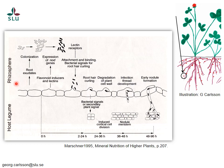The formation of a root nodule starts by bacteria in the rhizosphere sensing exudates from the roots — different types of carbohydrates, proteins, or small molecules leached out from the root. These cause certain reactions in the bacteria: they start to grow, divide, and multiply because some of these compounds provide energy for bacterial growth. Another reaction is that certain genes are activated in the bacteria, and some of these lead to the bacteria producing certain molecules placed on the cell wall, shown here by a change in color of the bacterial cells.